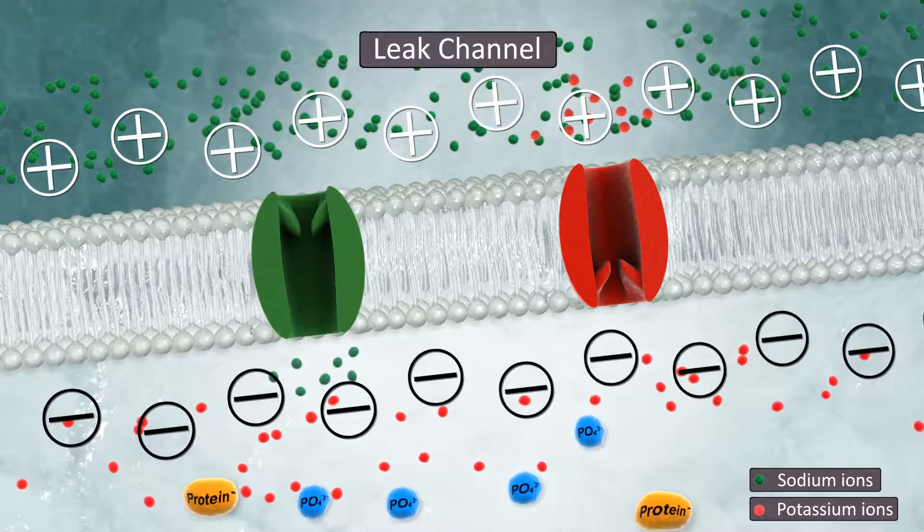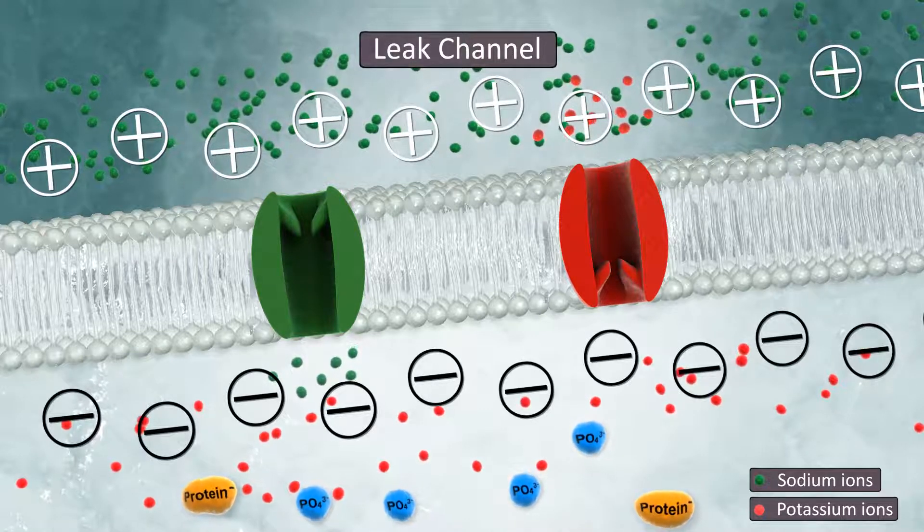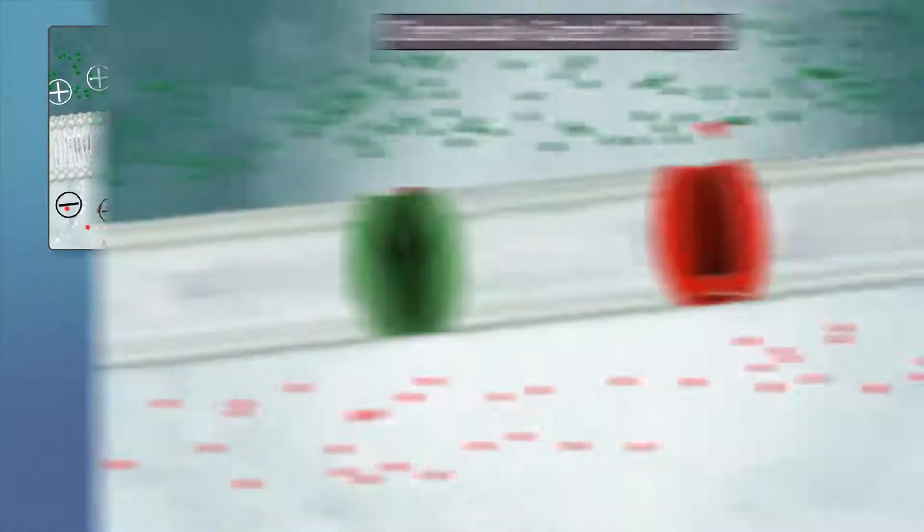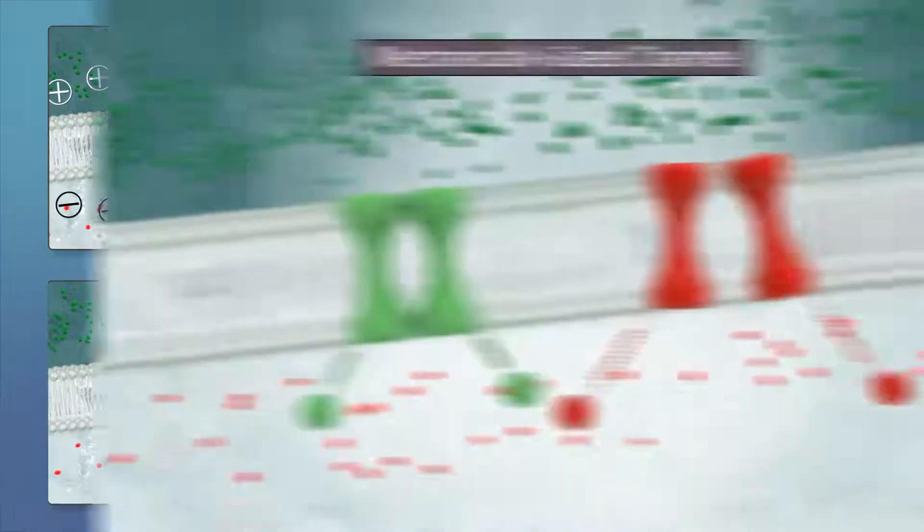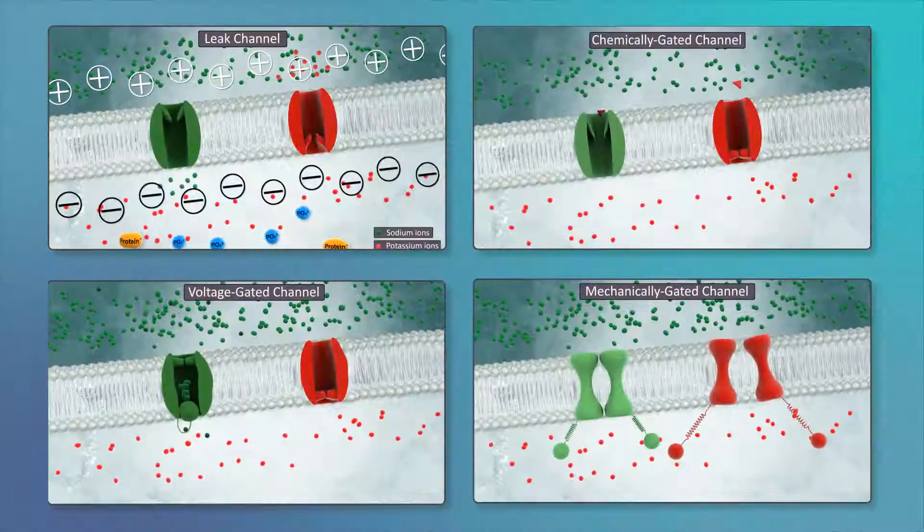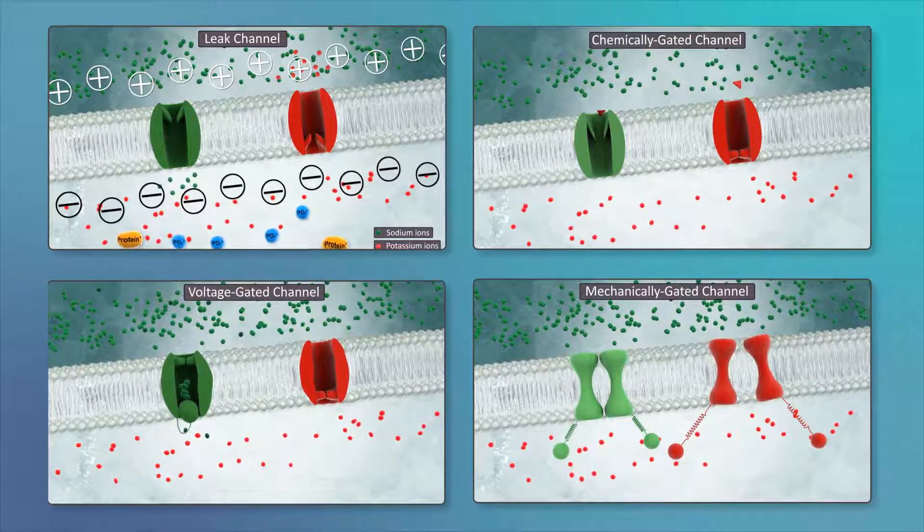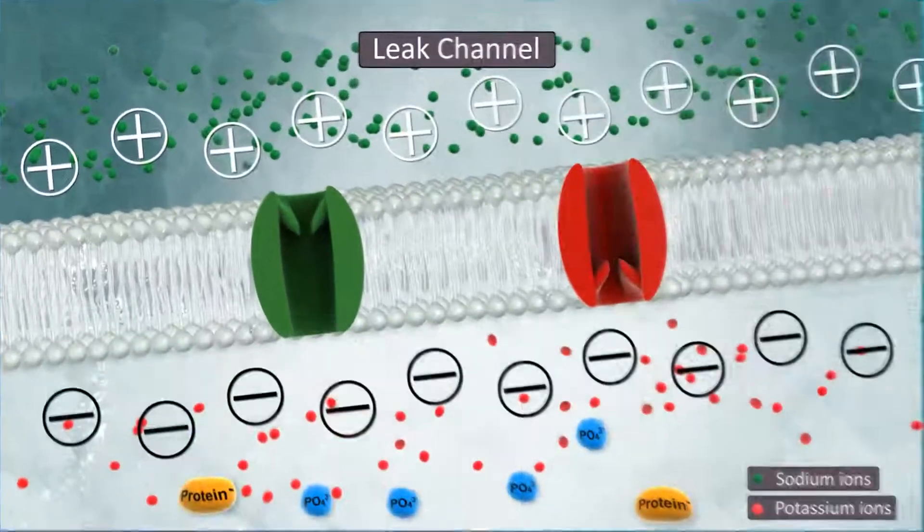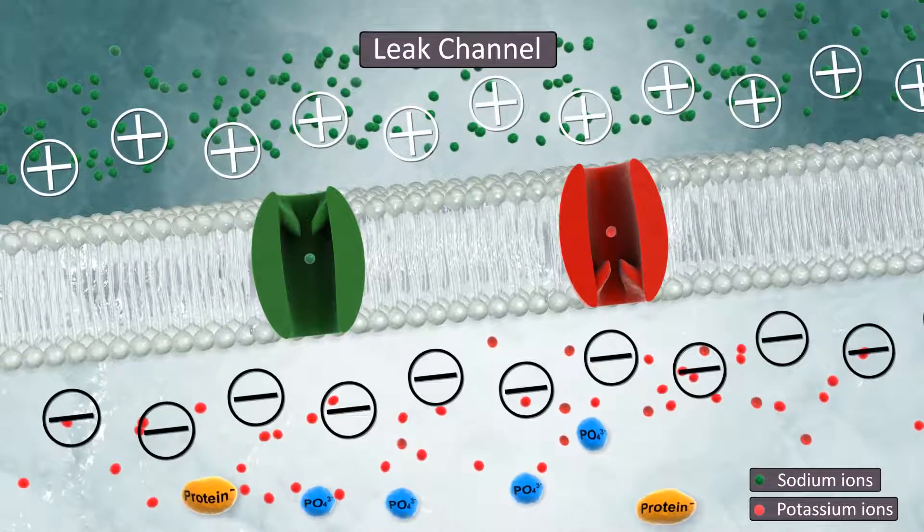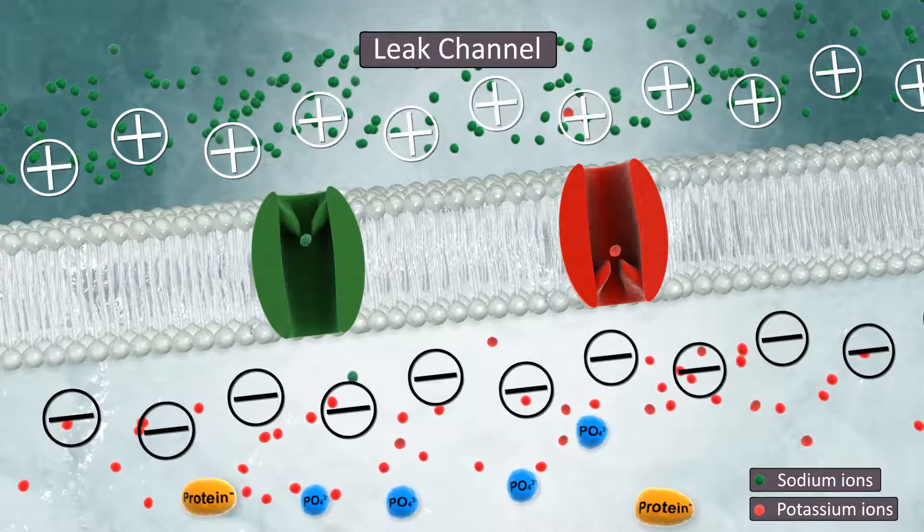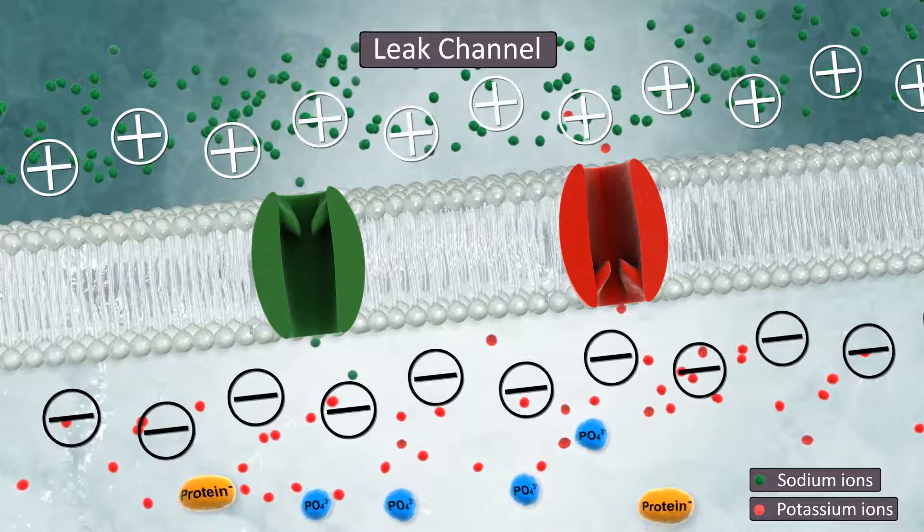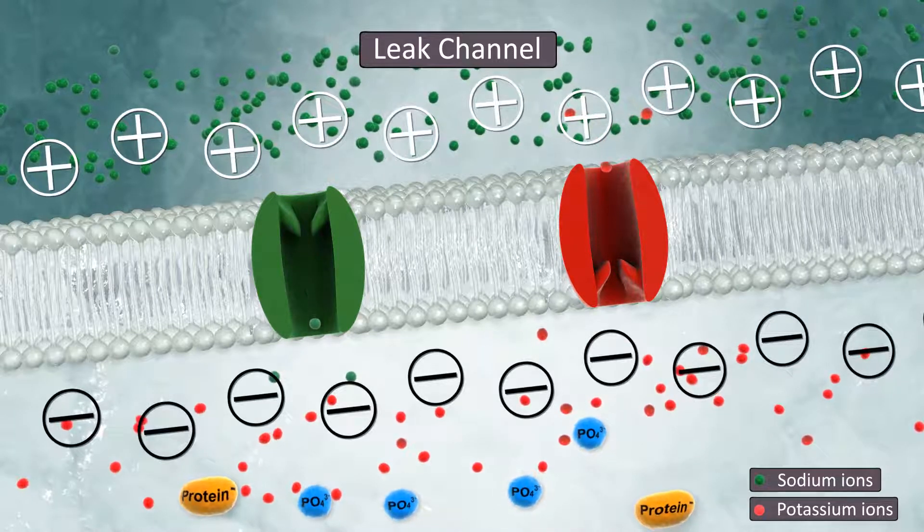Leak channels are typically always open. The three types of gated channels, chemically, voltage, or mechanically gated, must open their gate to allow the passage of ions. A leak channel allows only a trickle of sodium or potassium ions to diffuse through the membrane. Leak channels contribute greatly to the generation and maintenance of the resting membrane potential.